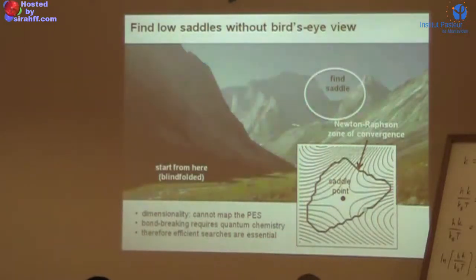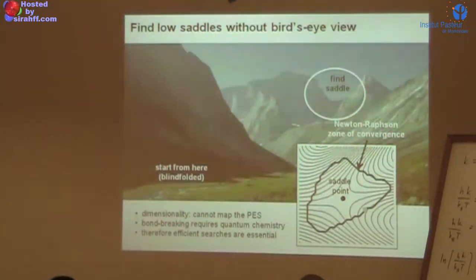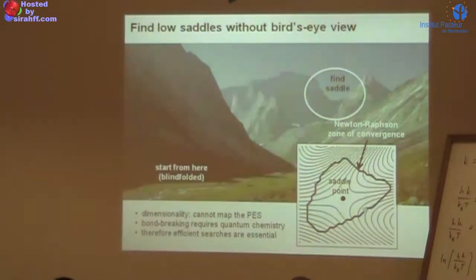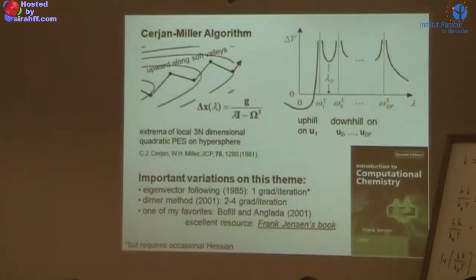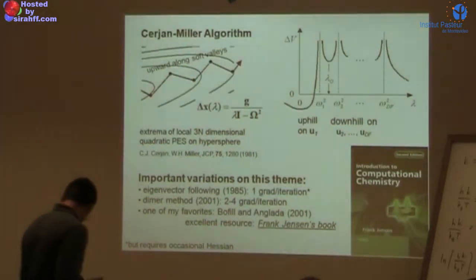What we need are systematic algorithms that follow the soft direction upward — like following a creek upstream — rather than downward. The Cerjan-Miller algorithm from Bill Miller in 1981 was the first to do this systematically. The idea is: take a hypersphere of fixed distance from your current point, find stationary points on it. There's one in the direction of the steep mountain walls and one in the direction toward the headwaters — the direction we want to go. There's a specific recipe for choosing that direction in multidimensional problems based on the spectrum of eigenvalues of the second derivative matrix at the expansion point.